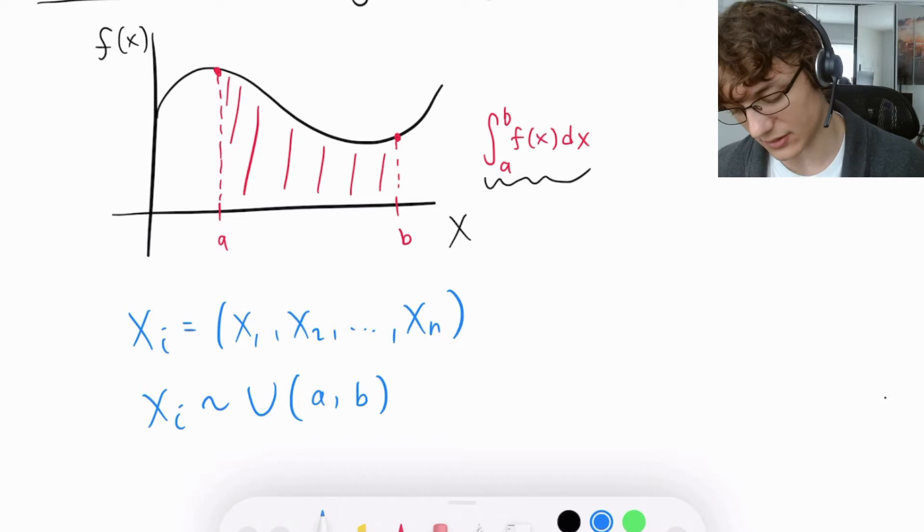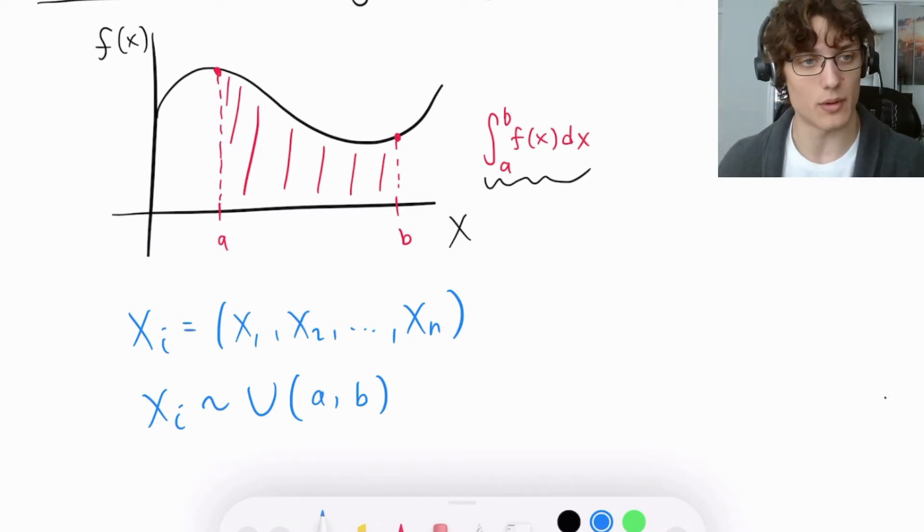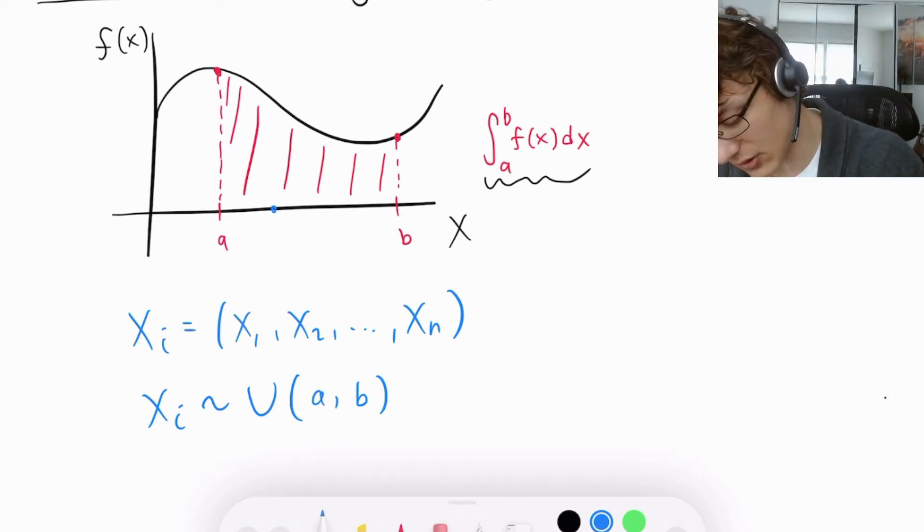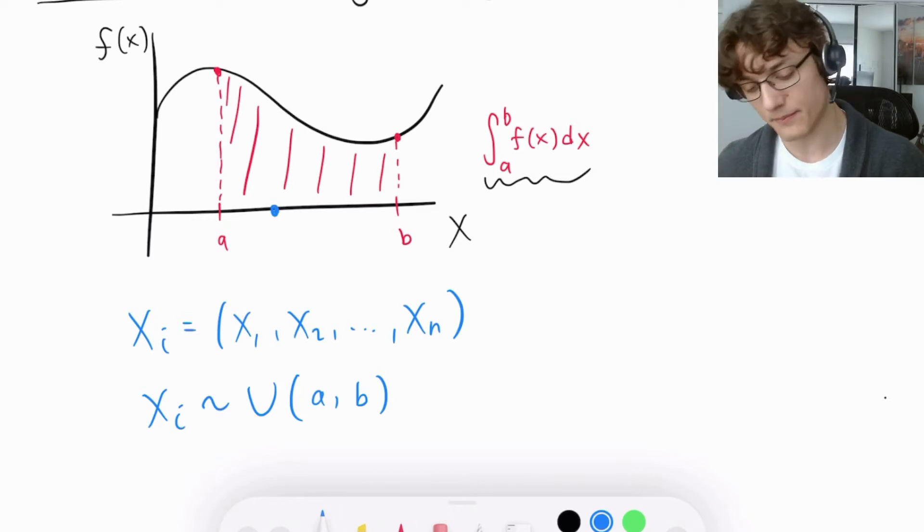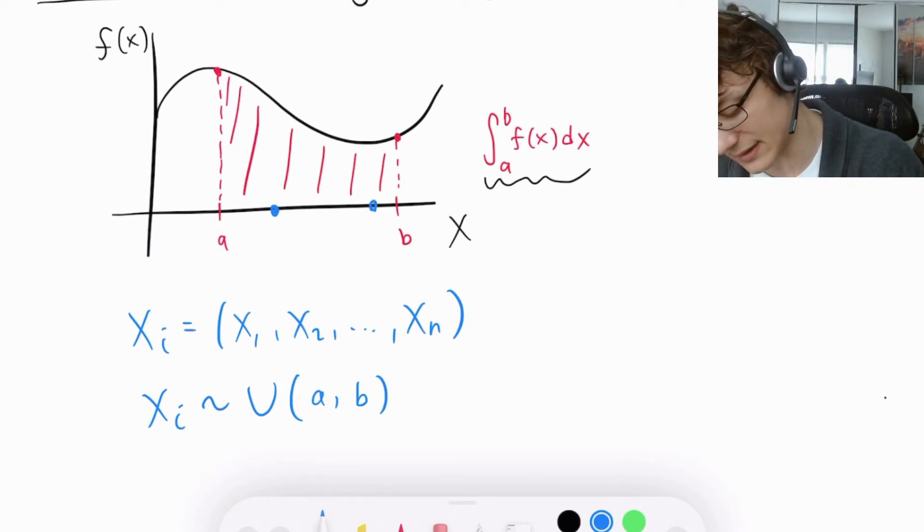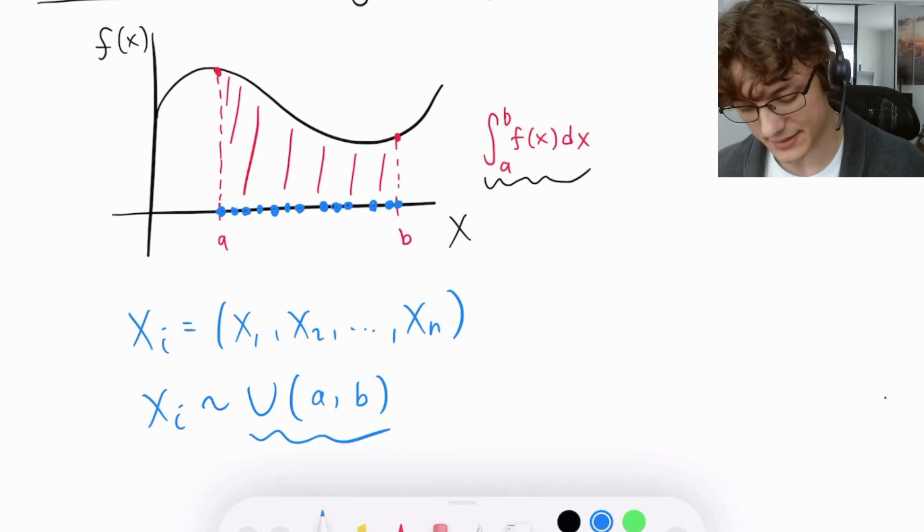So what is that going to look like? If we randomly sample one point, maybe it'll fall right here between a and b. Maybe another one will get this guy, maybe another one this guy. And then as we keep randomly sampling points, each one has the same probability of being selected from this uniform distribution. And we're going to end up with a collection of points nicely distributed across the x-axis.